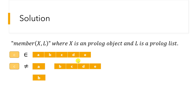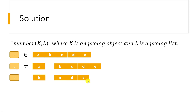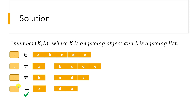We then take b from the remaining list, again dividing into the first element and the rest, and compare with c — still no match. Next we break out c, and now it matches. Our search finishes there; the Prolog goal is satisfied at that point.